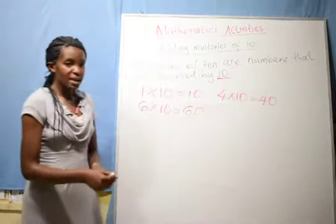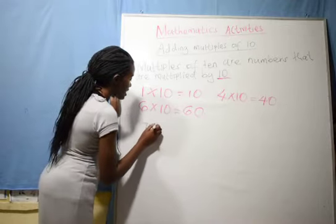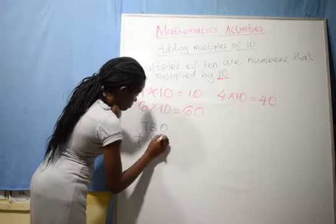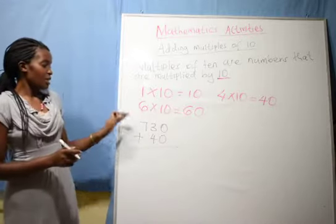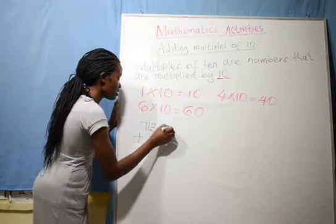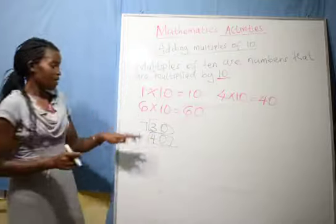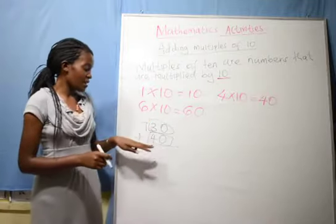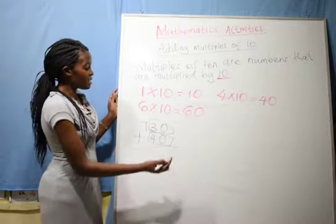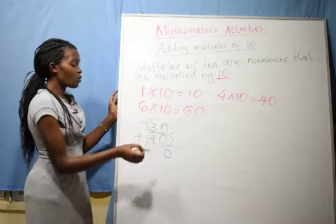Now, we are going to add the multiples of 10. Here, for example, we have 730 plus 40. The multiples of 10 here are 30 and 40. When you are adding, we start with the ones. 0 plus 0, we get 0. 3 plus 4, we get...